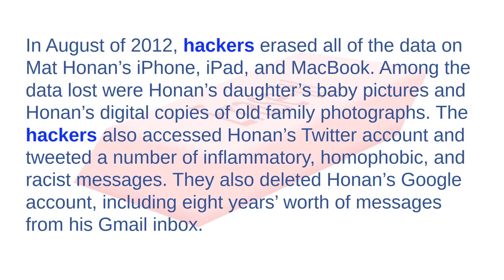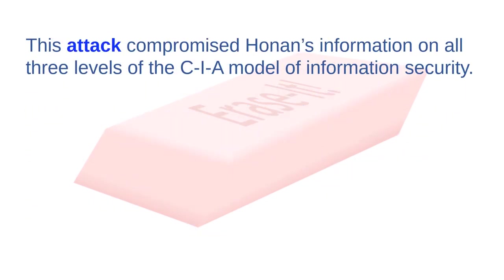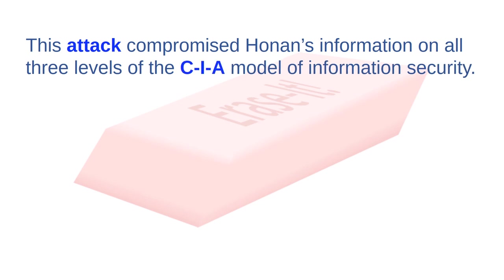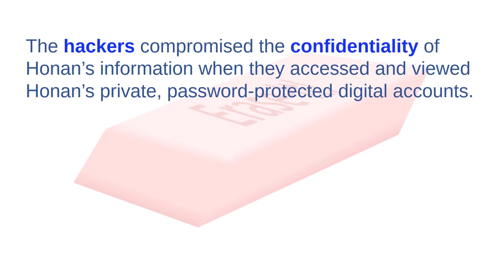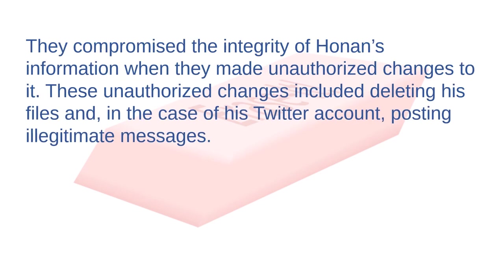They also deleted Honan's Google account, including eight years' worth of messages from his Gmail inbox. This attack compromised Honan's information on all three levels of the CIA model of information security. The hackers compromised the confidentiality of Honan's information when they accessed and viewed his private, password-protected digital accounts. They compromised the integrity of his information when they made unauthorized changes to it, including deleting his files and posting illegitimate messages on his Twitter account.